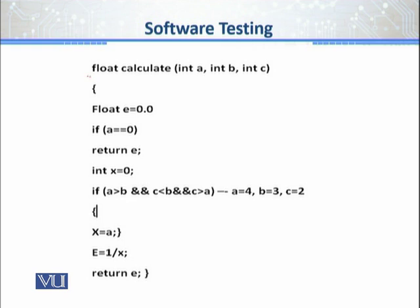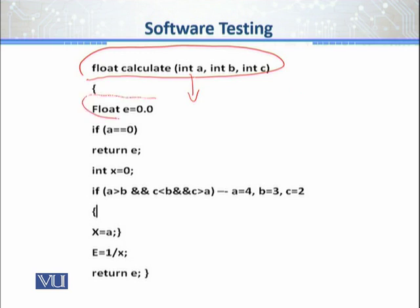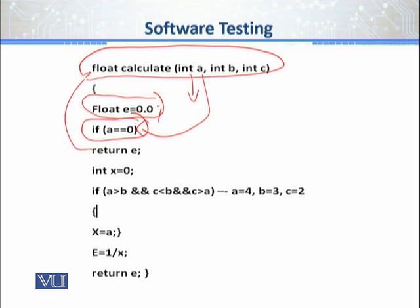We basically have a function called 'calculate' with three parameters: a, b, and c. Inside the function, we have a float type variable declared which is 'e' — I missed out a semicolon here. After that, we check: if 'a' value is zero (our first parameter), the program should exit and return whatever the value of 'c' is, which is currently zero.